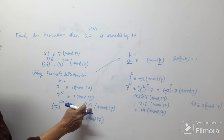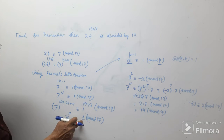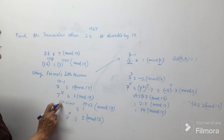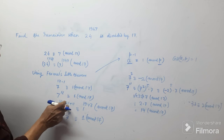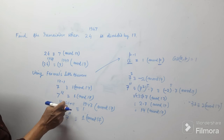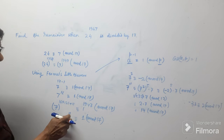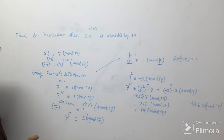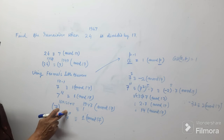Now 7 to the power 1947 equals 7 to the power (16×121 + 11). The part (7^16)^121 gives remainder 1 raised to the power 121, which equals 1. So we are left with 7 to the power 11 mod 17.